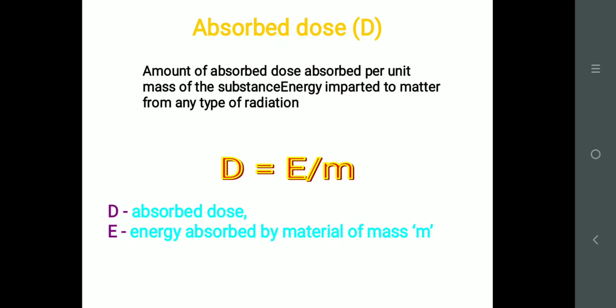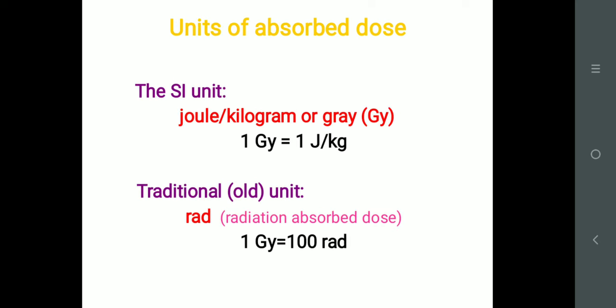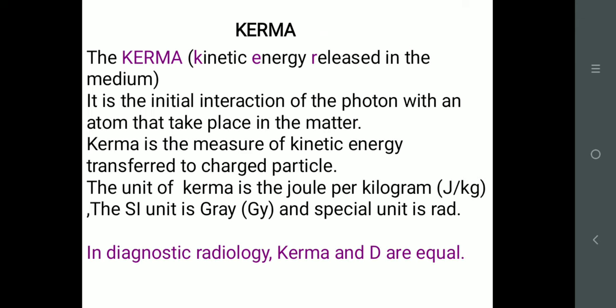Absorbed dose means you have been exposed to radiation — how much is actually absorbed in your body. Once you have been exposed, that is my absorbed dose: how much my body has absorbed. The unit of absorbed dose is joule per kg, and it is called the Gray. One Gray is equal to one joule per kg, and the old unit was Rad — Radiation Absorbed Dose. One Gray is equal to 100 Rad.